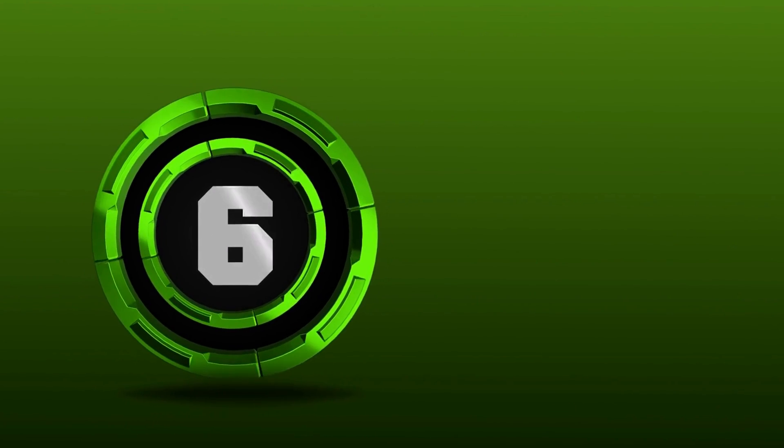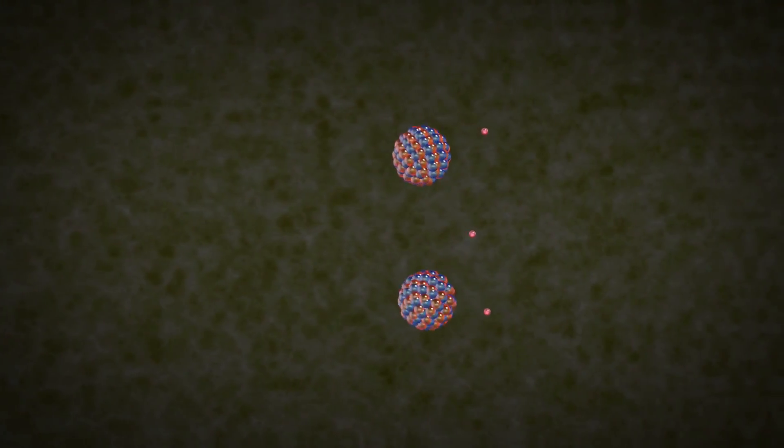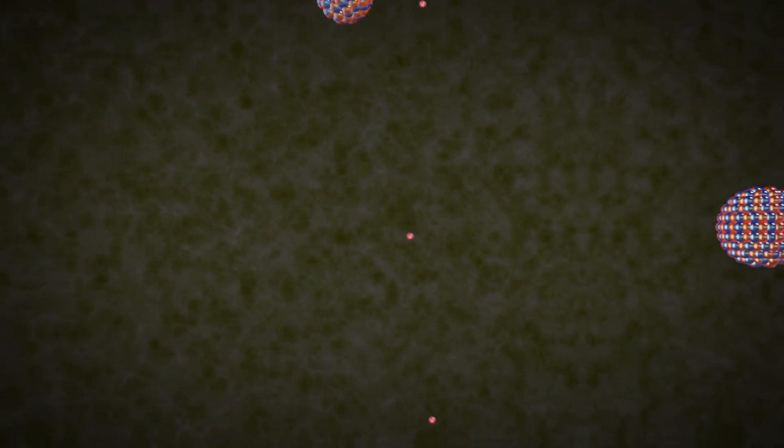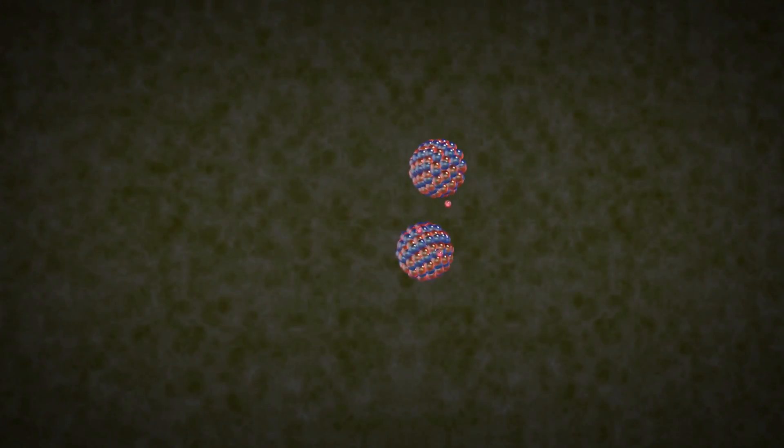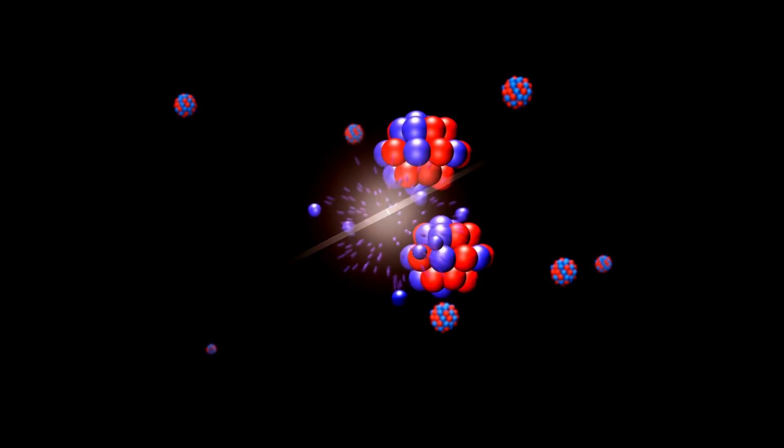Step 6: Chain reaction. Depending on the circumstances, the released neutrons may strike other heavy nuclei, causing them to split as well. As a result, a self-sustaining chain reaction is created in which each fission event releases more neutrons, which then cause other fission reactions.